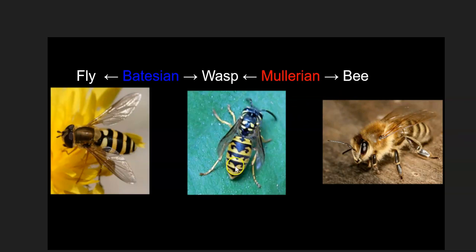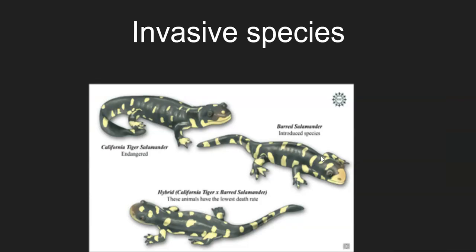These bright colors signal to predators: don't mess with me, I'm toxic. That is aposematism. Next time we're going to talk about invasive species involving the California tiger salamander and the barred salamander, which has been brought in from elsewhere.